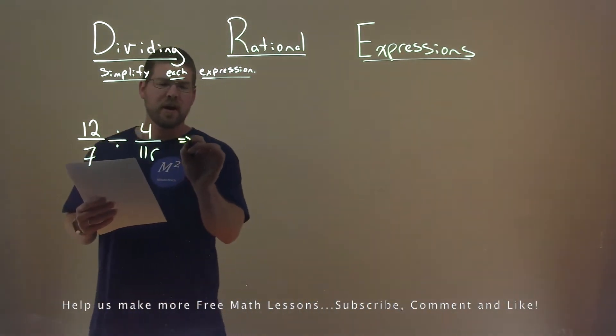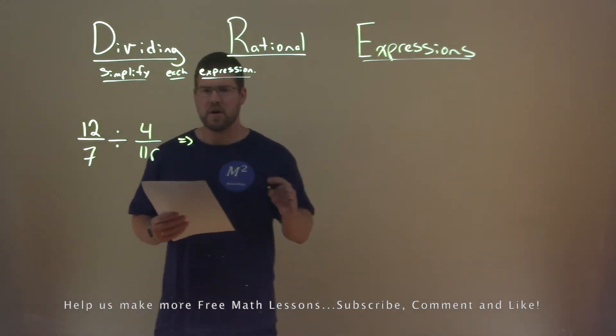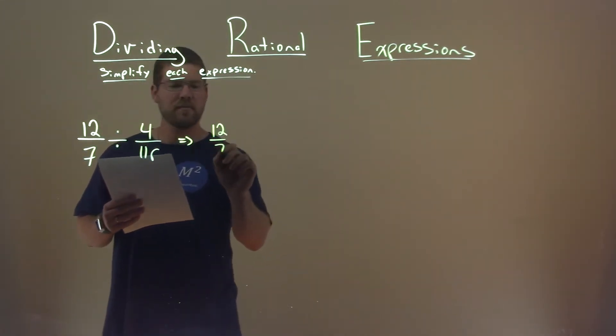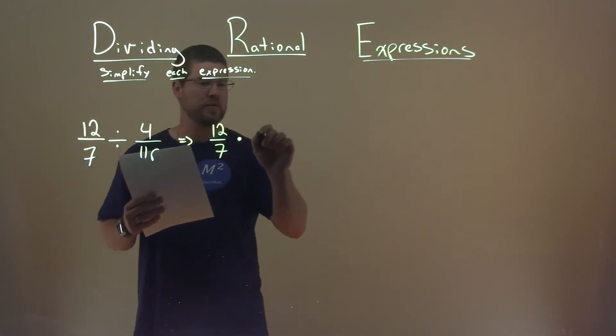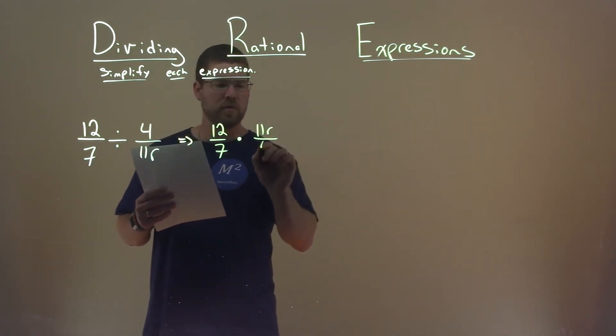With division here, I like to rewrite this as a multiplication problem. Keep the 12 over 7, but instead of dividing, I'm multiplying here, and we flip the second fraction. 11r over 4.